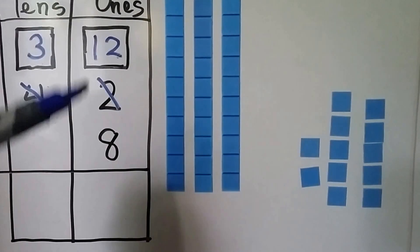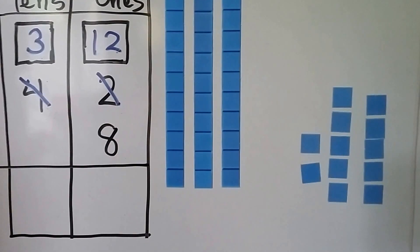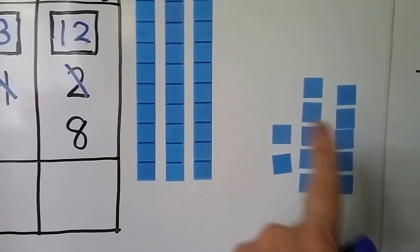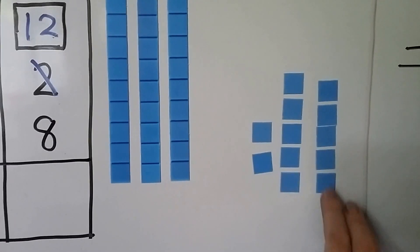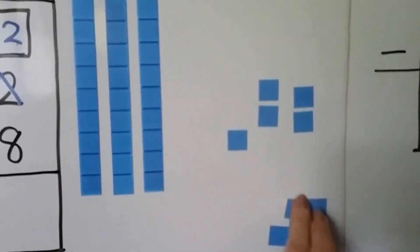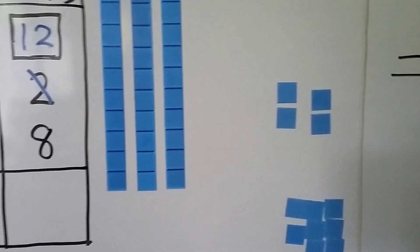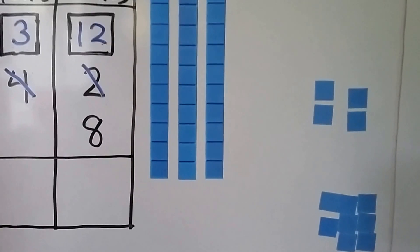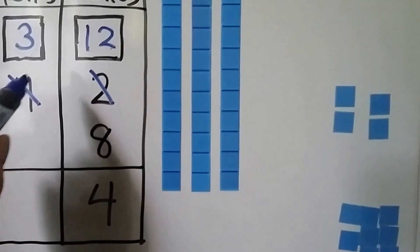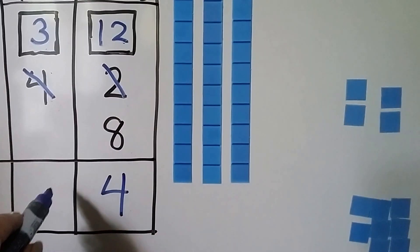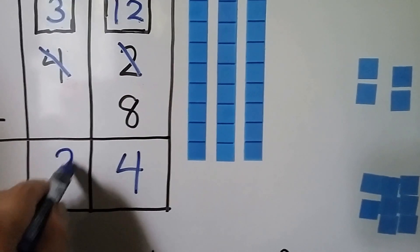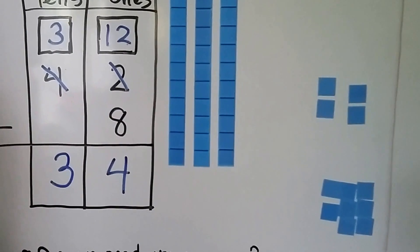Now we can do 12 minus 8 in the 1's place. We have 12 ones here, and if we take 8 away, that's going to leave 4 ones. We have a 3 here and there's nothing here, so we just drop the 3 down. And the answer is 34.